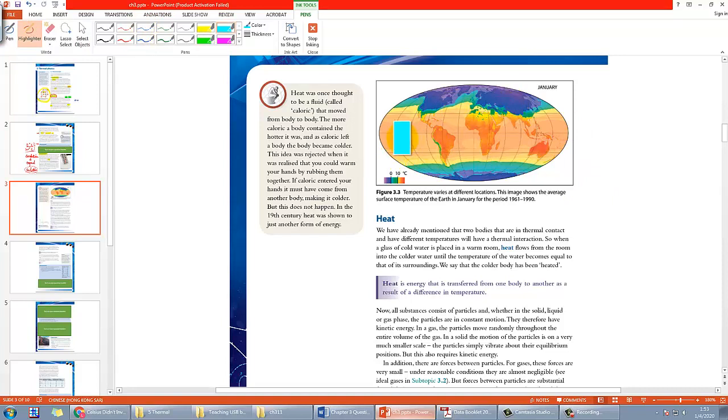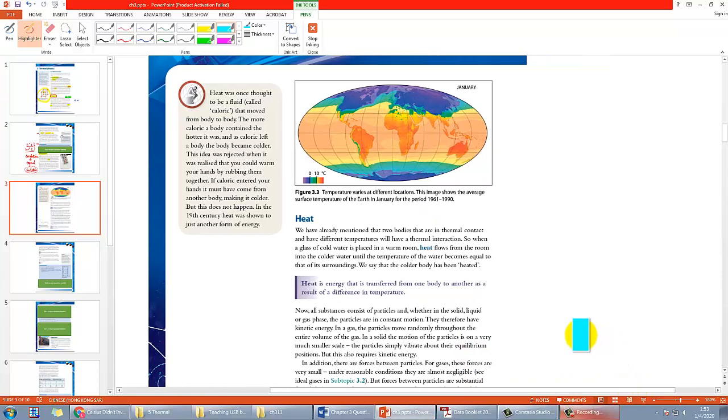These are just a map showing you the variation of the temperature. Apparently, for some of you who always travel or if you study geography, you know as you are closer to the equator then the temperature is usually higher, while for the two poles the temperature would be lower.